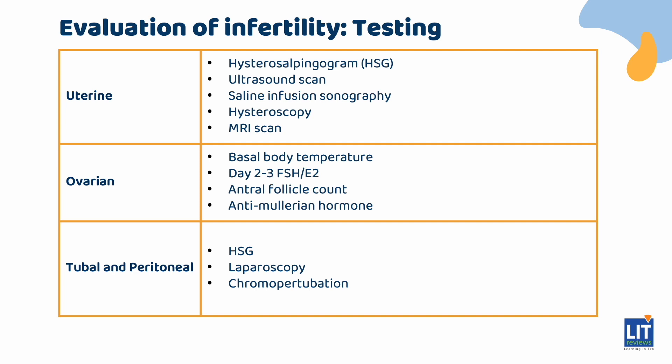To evaluate ovarian factor, use basal body temperature to check if a woman is ovulating, and check FSH, estradiol, and AMH (anti-Müllerian hormone) levels to assess ovarian reserve. Antral follicle count is an ultrasound-guided follicle count to see how many follicles grow early each month and is a major determining factor in ovarian reserve. Tubal factors can be tested using an HSG or with laparoscopy — a surgery where tubes are directly visualized. During laparoscopy, dye can be pushed through the cervix, and if it spills out, this is called a successful chromopertubation.